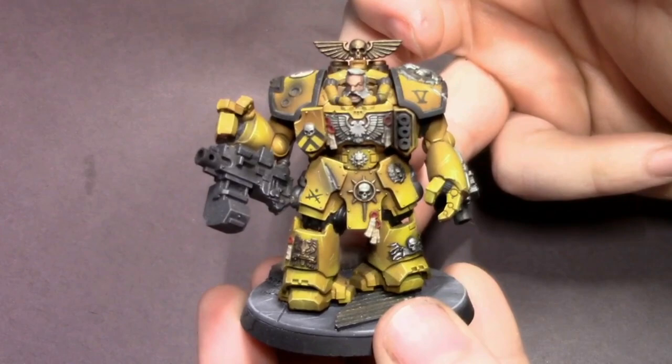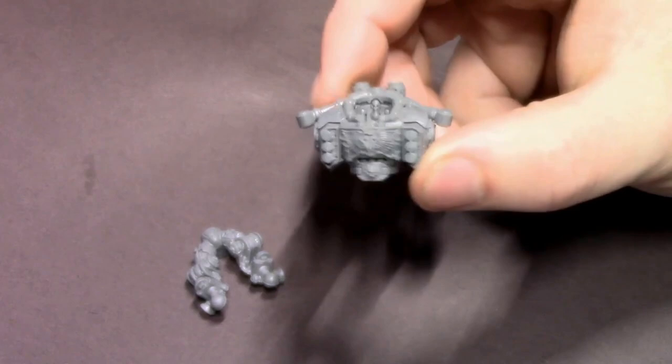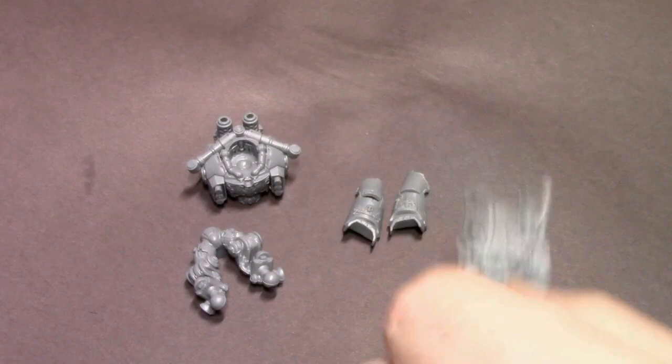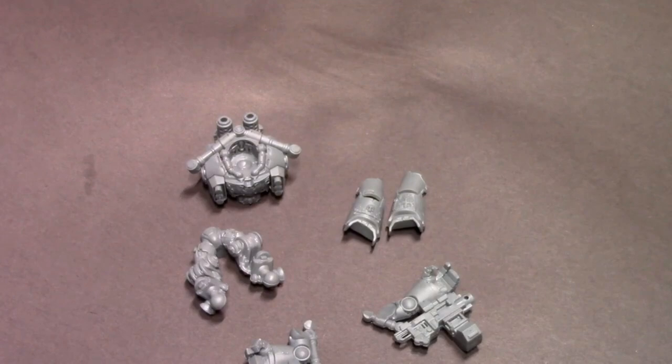Basically what we're going to do is change some proportions on the model through some very easy conversions so that they look really cool on the tabletop. I've already assembled the model into some basic subassemblies following the directions listed in the box. You can see I have the upper torso, the legs, and the arms with the heavy bolters already assembled and cleaned up with most of the mold lines so we can get right into the conversions.